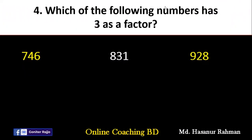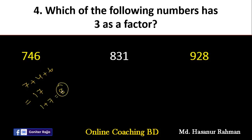Which of the following numbers has 3 as a factor? That means the question asks whether the number is divisible by 3 or not. We know that 3 is a factor of a number if it is a factor of the sum of its digits. If the sum of the digits is divisible by 3, then the number is divisible by 3. Let me check 746: 7 plus 4 plus 6 is 17. Adding 1 plus 7 gives 8. 8 cannot be divided by 3, so 746 is not divisible by 3.